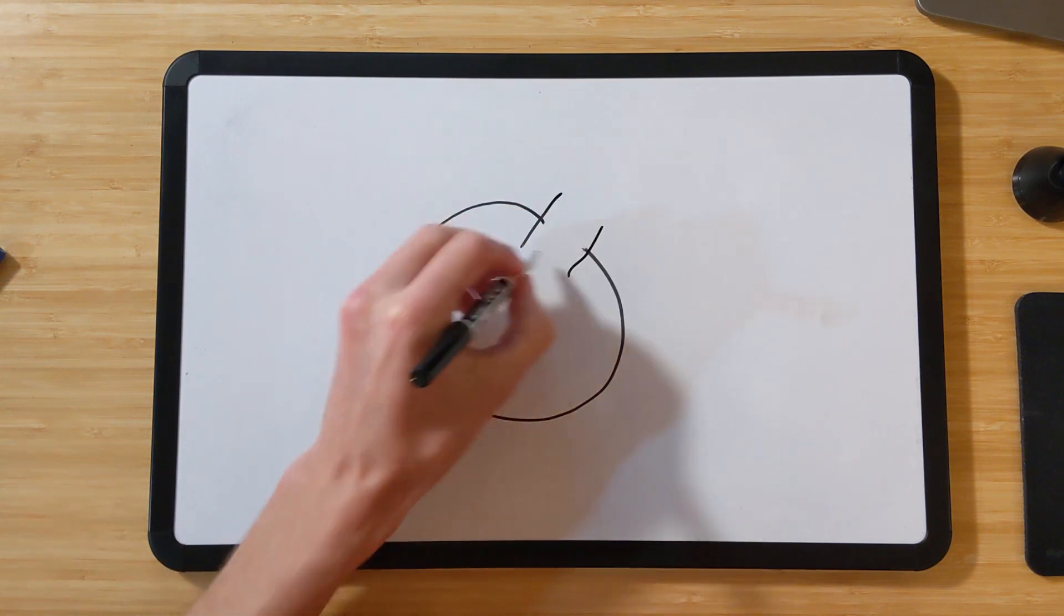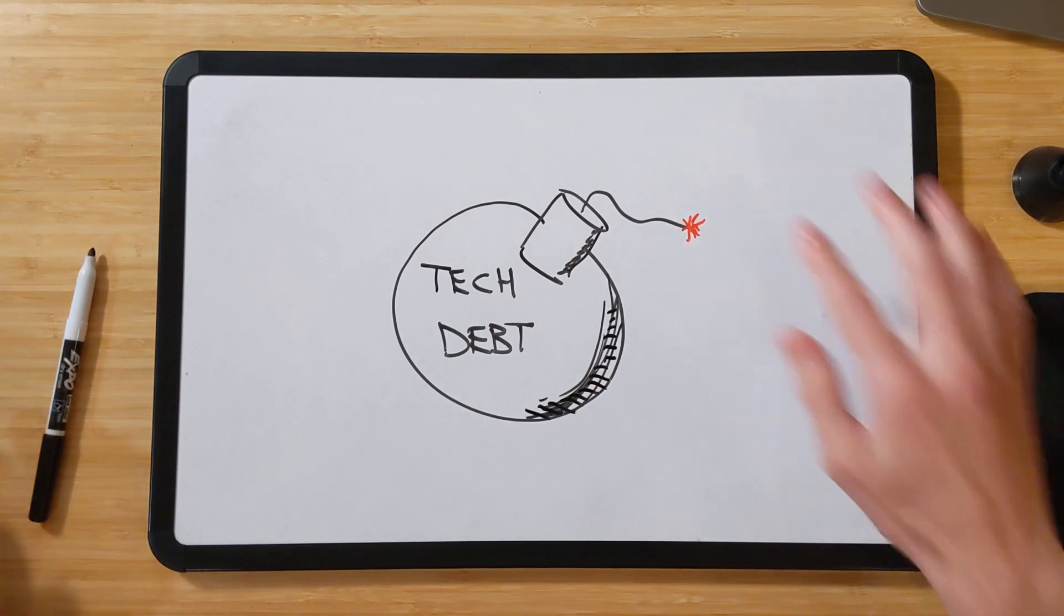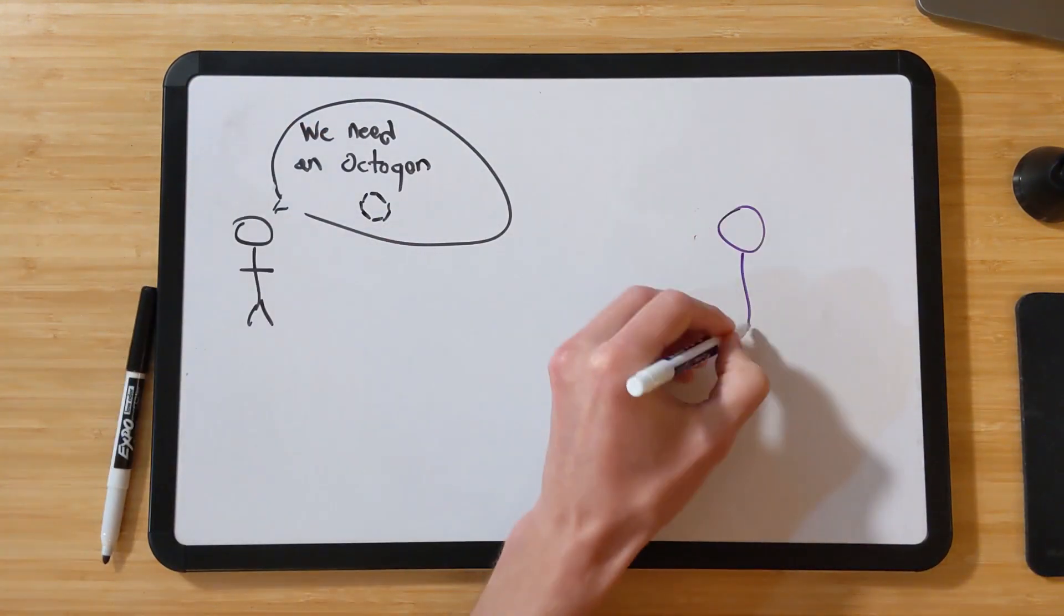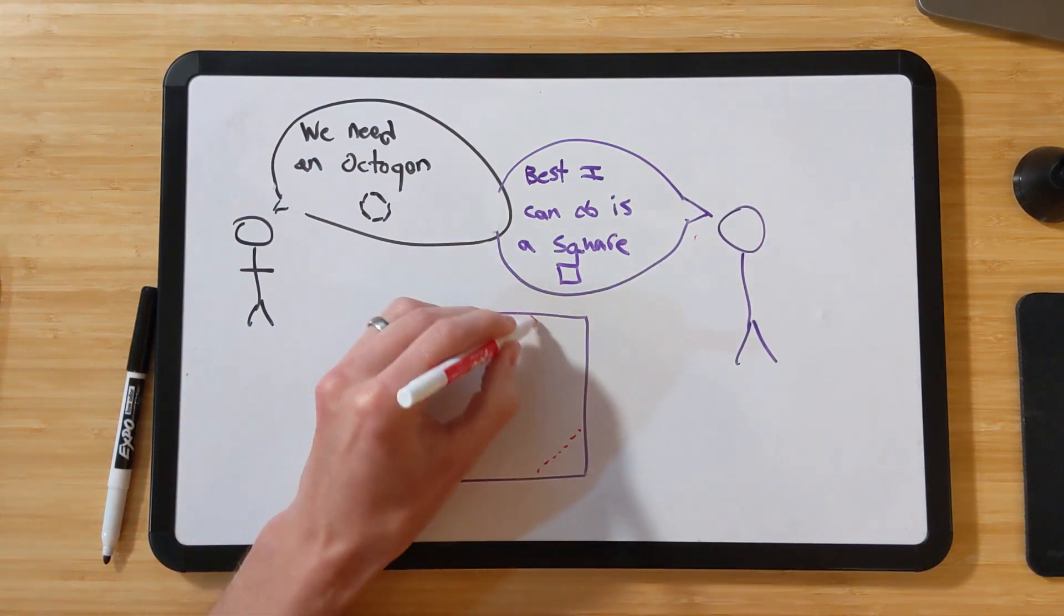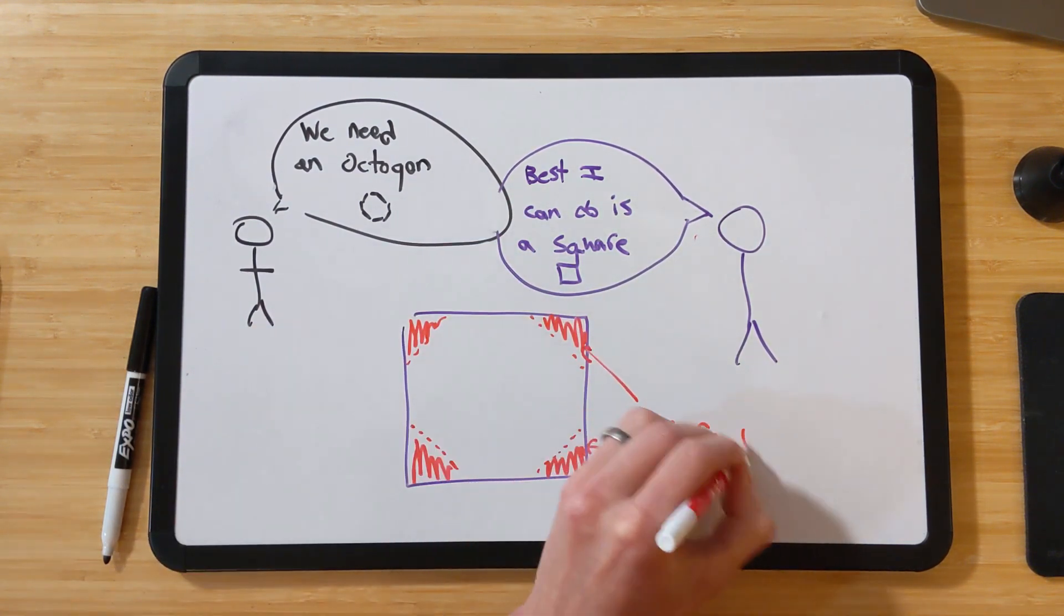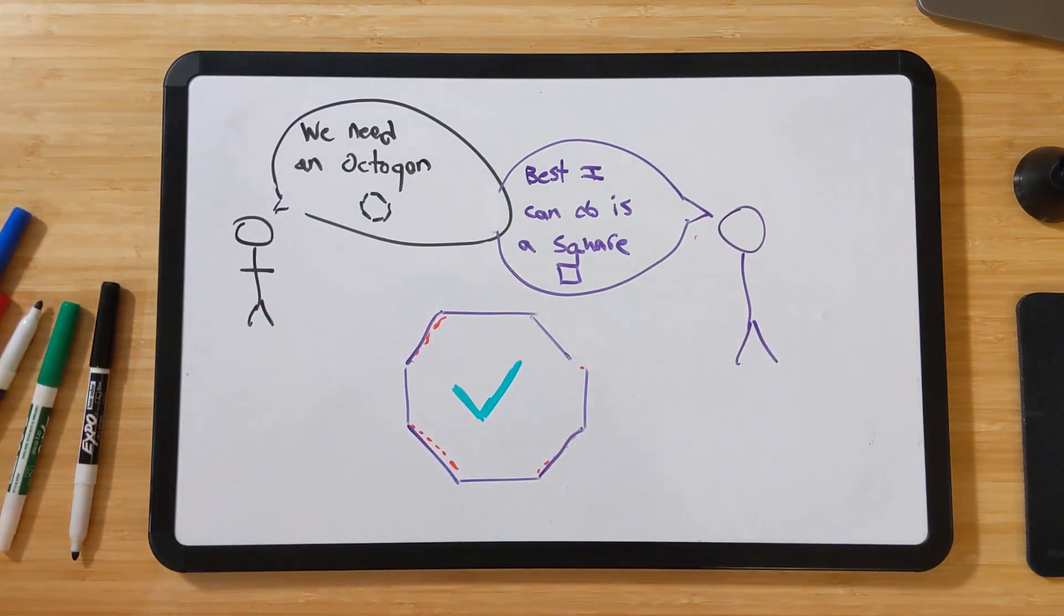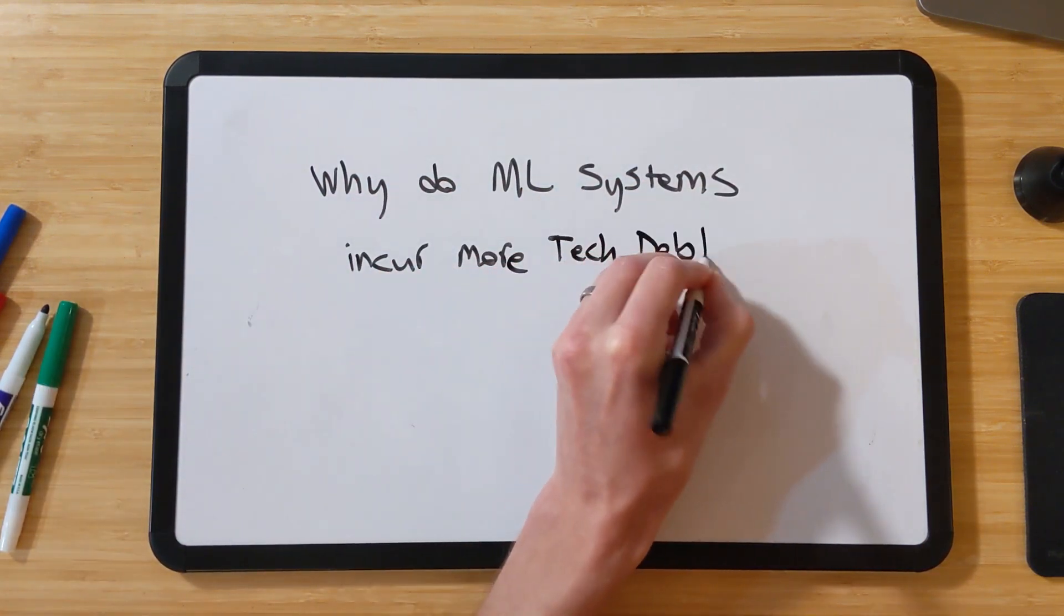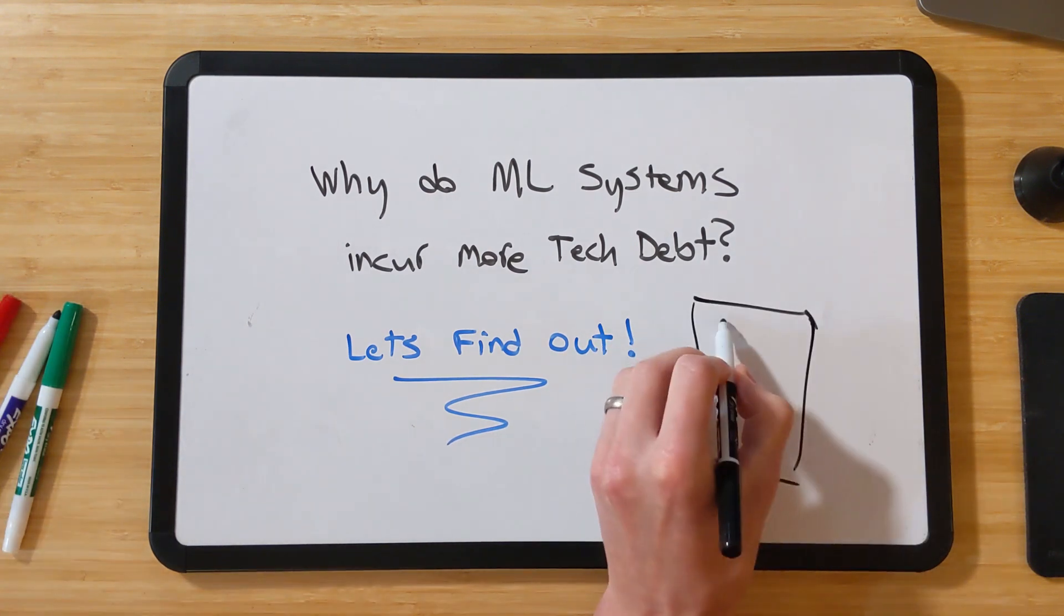If you're not familiar with the term technical debt, it is a metaphor used in software engineering to describe the effect making a particular design choice will have in terms of generating future work. For example, to meet a critical deadline, you might implement a quick and brittle solution, knowing full well that in the future, you will need to replace that solution or refactor it into a more robust implementation. The paper lays out a variety of reasons that machine learning systems incur more technical debt than their traditional software system counterparts, and I'm going to highlight the top few.